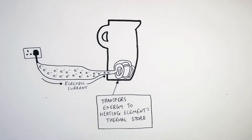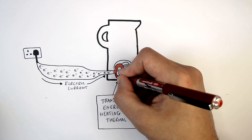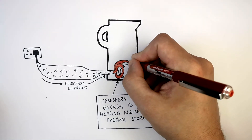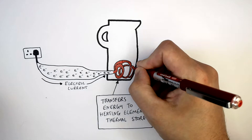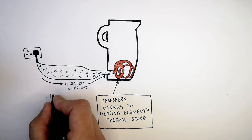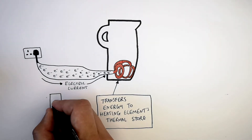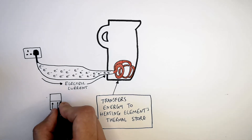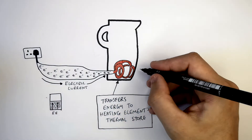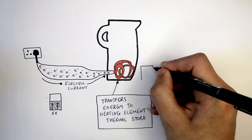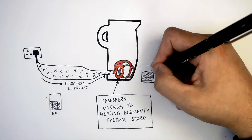If you're going to increase the thermal energy store of the heating element inside the kettle, that means the temperature is going to rise. This shows the electrical energy store that is being transferred to the heating element of the kettle, causing the thermal energy store of the heating element to increase.